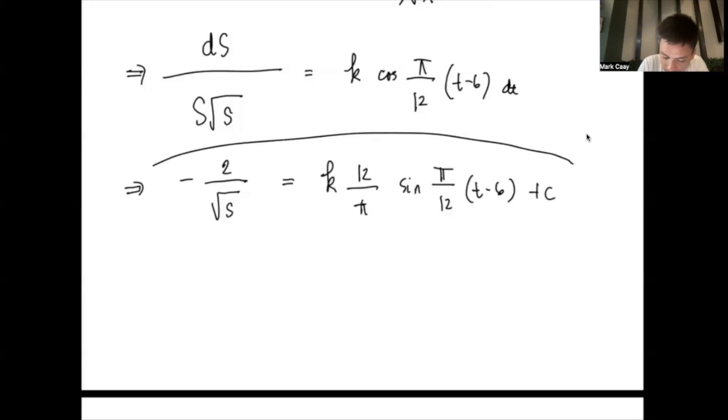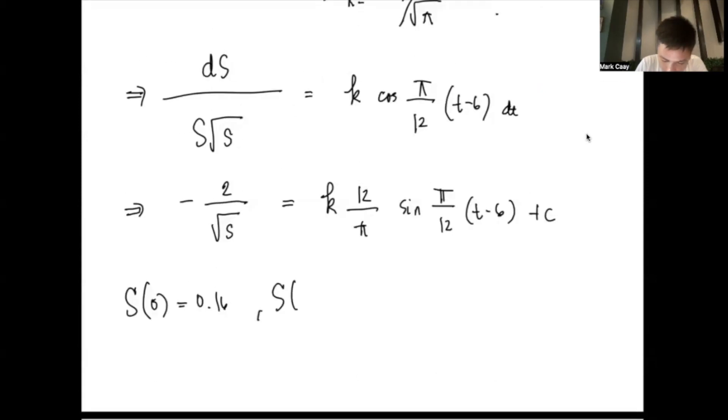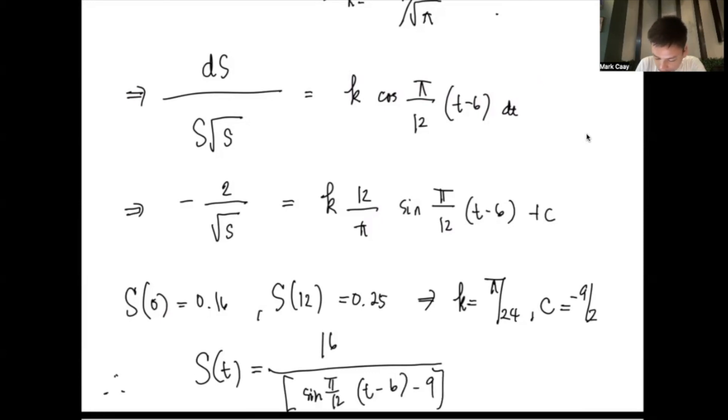Okay. So, this is now our implicit form. And because s(0) is 0.16, s(12) is 0.25, you can substitute these values. I'll leave the substitution to you, but we will obtain the value of k as pi over 24, and c equals negative 9 over 2. So, therefore, our s(t) is equal to 16 times sine of pi over 12 times (t minus 6) minus 9, all squared. That's it.